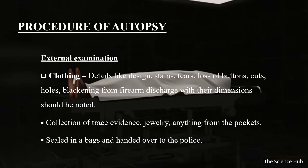Now the procedure of autopsy, which is divided into two parts: external examination and internal examination. In external examination, we look at clothing — details like design, stains, tears, loss of buttons, cuts, holes, blackening from firearm discharge, with dimensions — all these should be noted. Then collection of trace evidence: jewelry and anything from the pockets should be sealed in a bag and handed over to the police.